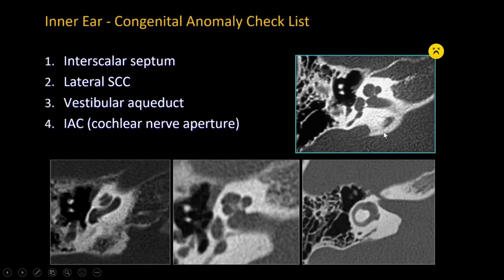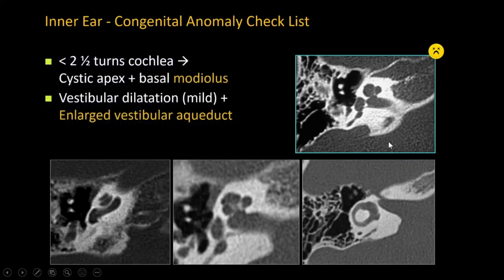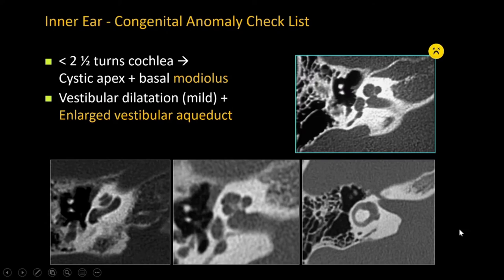Here is an example where some structures are not quite intact. The apical turn is not well formed — it is a little dilated and cystic. The modiolus is not well visualized, and there is missing interscalar septum with barely visible basal modiolus deficiency. Notice there is a large dilatation of the vestibular aqueduct, roughly parallel to the posterior semicircular canal — very abnormally enlarged. This is a classic example of incomplete partition type 2, classically known as Mondini malformation, although we try to discourage using that term.